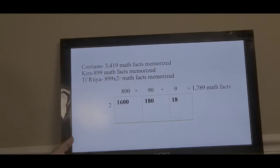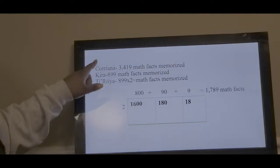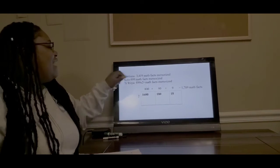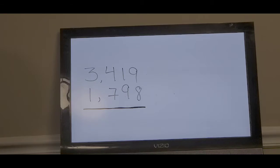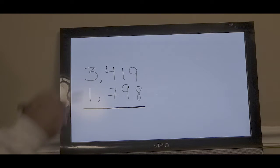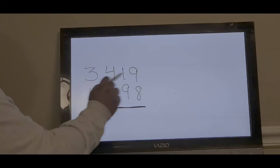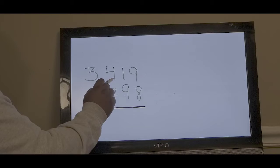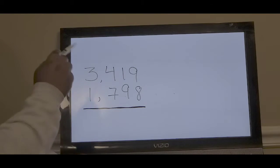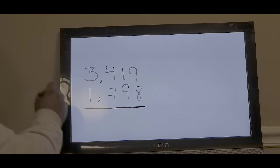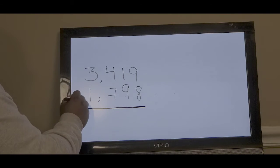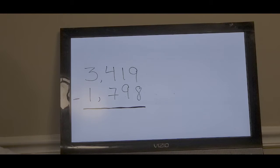But now we still need to solve to see how many more math facts Corianna has memorized than Taraya. We have Corianna's math facts memorized at 3,419, and Taraya's math facts that she memorized at 1,798. Now we're going to subtract to see how many more math facts Corianna knows than Taraya.